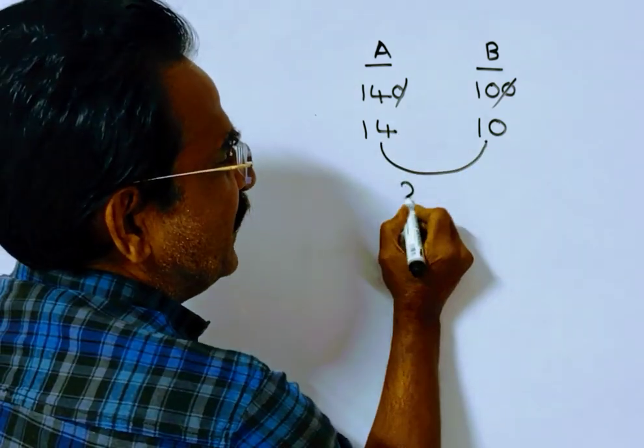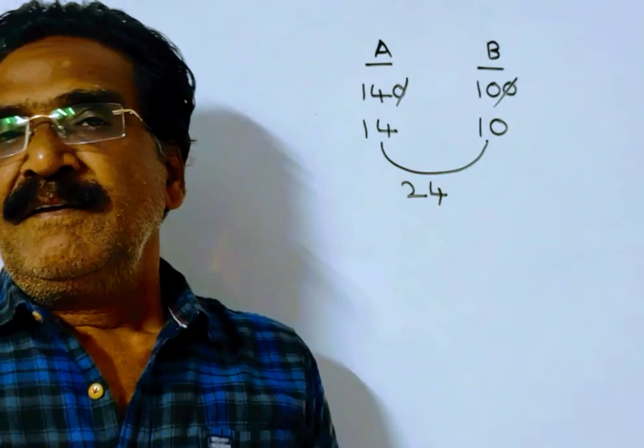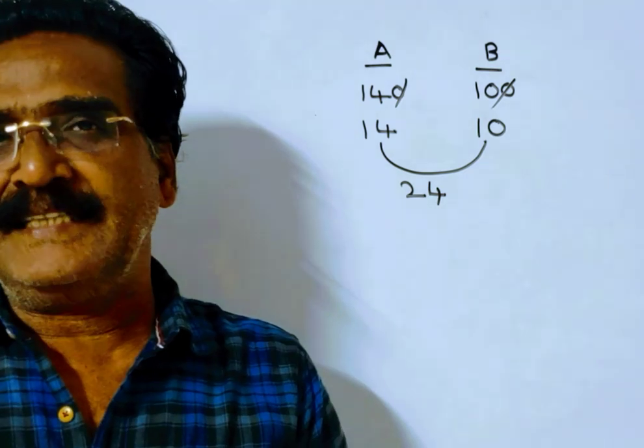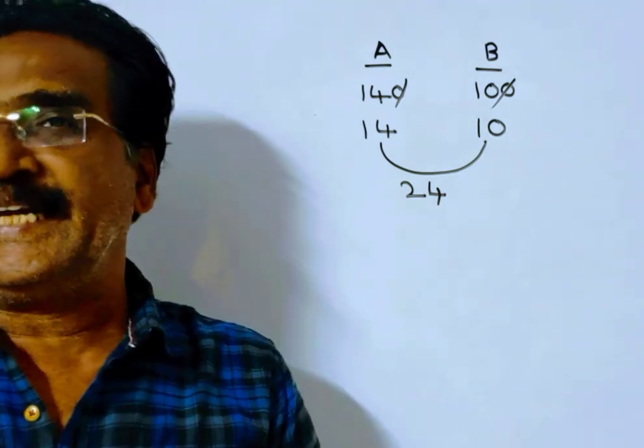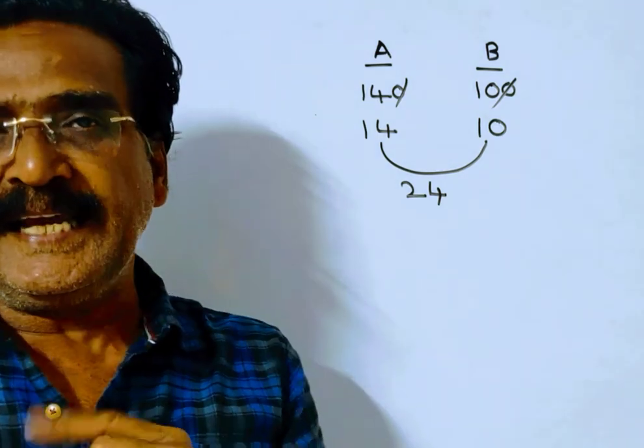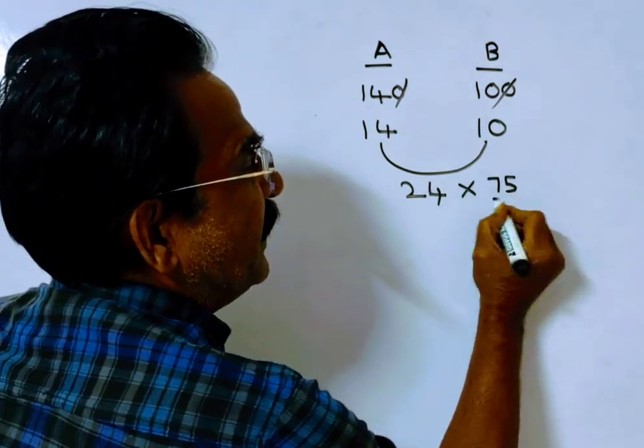So, they together can complete 24 units of work per day. Friends, they together can complete the work in 9 3/8 days. That means 75/8 days. So, doing 24 units of work per day, they can complete the work in 75/8 days.